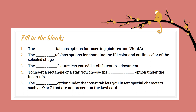Now let's discuss the back exercises — these are to be done in the book only. On the fair copy, only the four questions we discussed earlier are to be done. Fill in the blanks: Number one — the Insert tab has options for inserting pictures and Word Art. All objects such as pictures, Word Art, Clip Art, and shapes are present under the Insert tab. Number two — the Format tab has the options for changing the fill color and outline color of the selected shape.